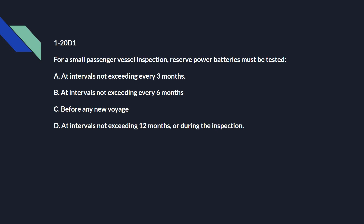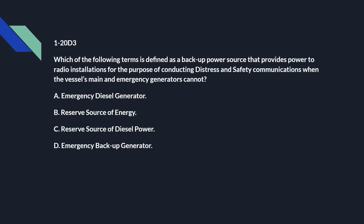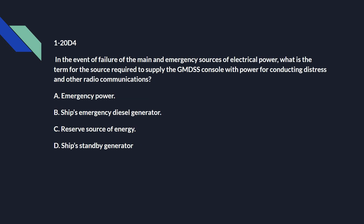1-20 Delta 1: For a small passenger vessel inspection, reserve power batteries must be tested D: at intervals not exceeding 12 months or during the inspection. 1-20 Delta 2: What are the characteristics of a reserve source of power under GMDSS? C: must be independent of the ship's electrical system when the reserve source is needed to supply power to the GMDSS equipment. 1-20 Delta 3: Which of the following terms is defined as a backup power source that provides power to the radio installations for distress and safety communications when the vessel's main and emergency generators cannot? That's B: a reserve source of power.